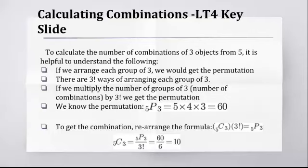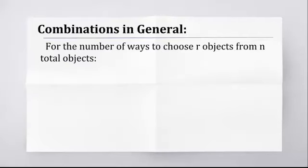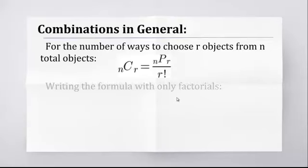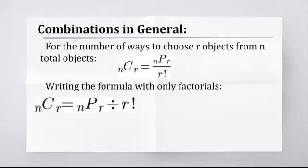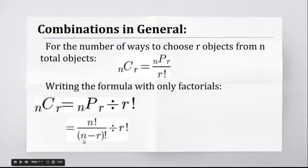Combinations in general, the number of ways to choose r objects from n total objects. So the number of groups of r you get from n is nCr, which is the permutation, nPr, divided by r!, which is the number of ways to arrange each group. Writing the formula with only factorials, this way, you can imagine why we're going to use a fraction. Whenever we divide fractions, I like to write them beside each other. This is the exact same thing, it's just the division sign is on the right. We're going to replace nPr with the formula we had before, n! over (n-r)!, divided by r!.